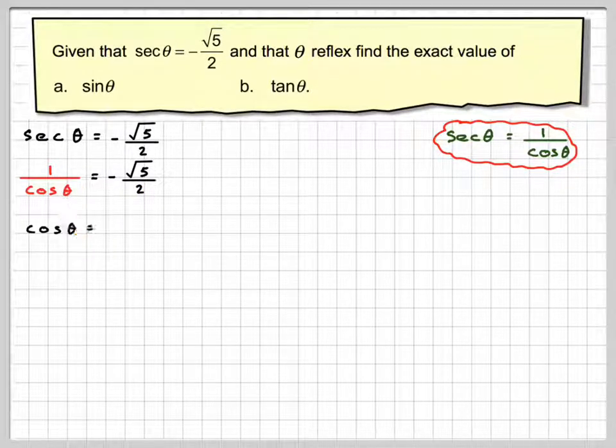And then if we take the reciprocal of both sides, we get cos θ, and when we invert this, it equals minus 2 over root 5.